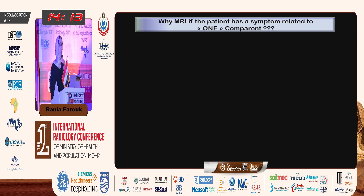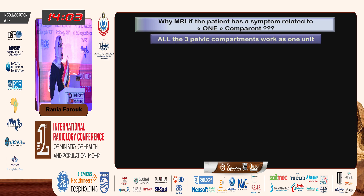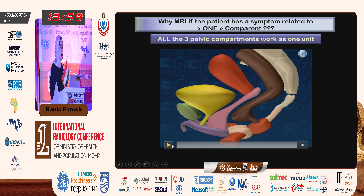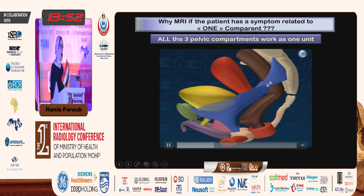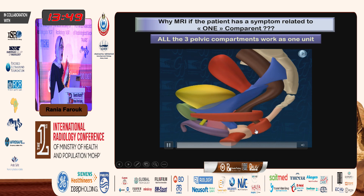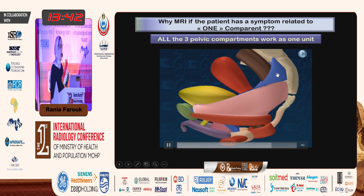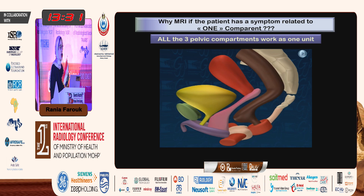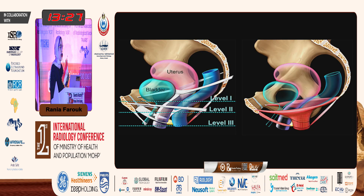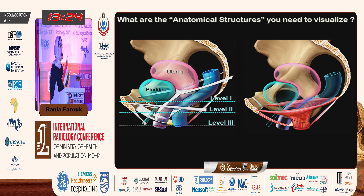Why MRI if the patient has symptoms related to one compartment? If the patient comes for stress incontinence, anal incontinence, or pelvic organ prolapse — why MRI? Because all three pelvic compartments work as one unit. This video shows exactly that: the bladder, the pubocervical fascia, the anal sphincter, the puborectalis muscle, and the iliococcygeus muscle all work together. Whenever a patient has a one-compartment problem, sooner or later it will project onto the other compartments.